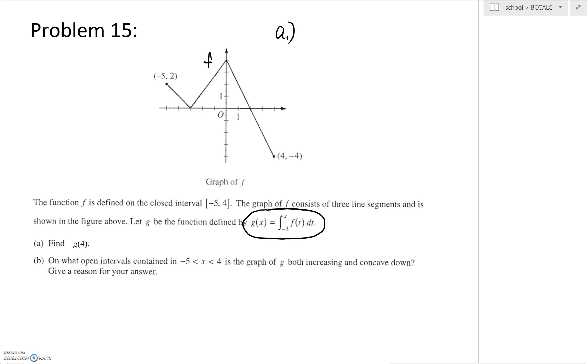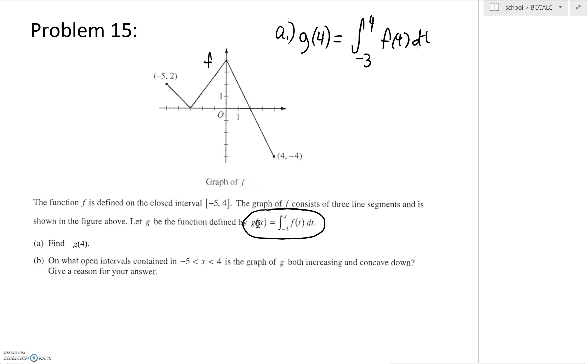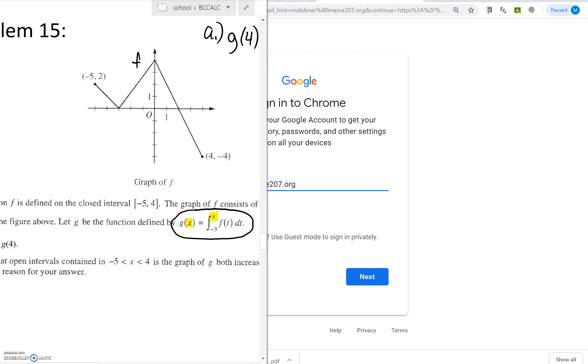For part a, we're going to find G of 4. Everywhere we see an X, we're going to replace it with 4, so we're going to integrate from negative 3 to 4 of this function F. I hope it's crystal clear why we're doing that. Wherever you have an X, whatever you're substituting in, you have to substitute in over here. That's the heart of an accumulation function.